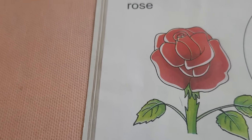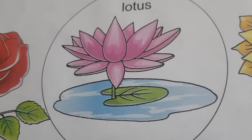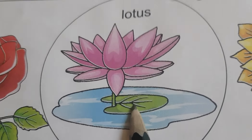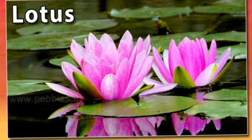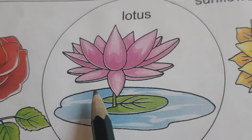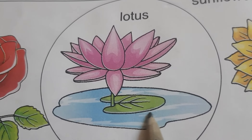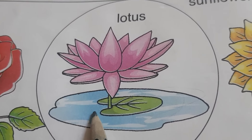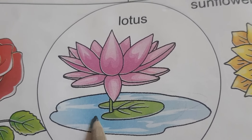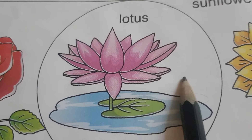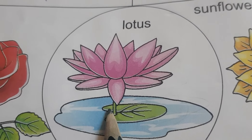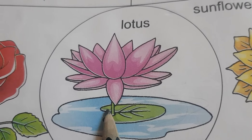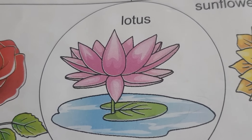Next flower is lotus. Lotus is the national flower of India. Aur aapko dikh raha hai lotus ke neeche — can you see what is there? It's water, because lotus paani mein grow hota hai aur paani mein float bhi karta hai. Lotus also comes in different colors and is a very very beautiful flower.